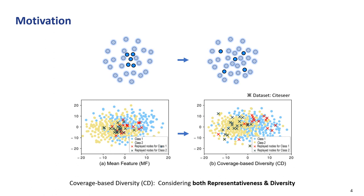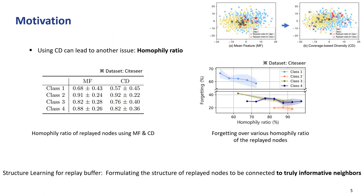To avoid this issue, we propose a replay buffer selection method named Coverage-Based Diversity, which considers both representativeness and diversity of the replay buffer. However, our method leads to another issue compared to the existing method, which is the relatively low homophily ratio of the replay buffer.